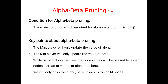Key points to remember: the maximum player will only update the value of alpha, and beta indicates the minimum player. At the time of the maximum player we update only the alpha values; at the time of the minimum player we update the beta values. With the help of backtracking we find out each and every node value using both backtracking and depth-first techniques.